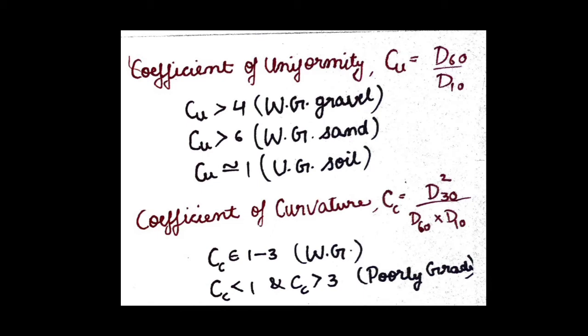In the case of coefficient of curvature, if the value of Cc lies between 1 to 3, it is considered well-graded soil. And if the value lies below 1 or greater than 3, it is considered poorly graded soil.